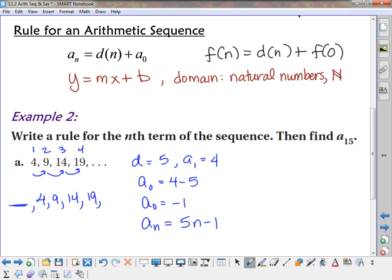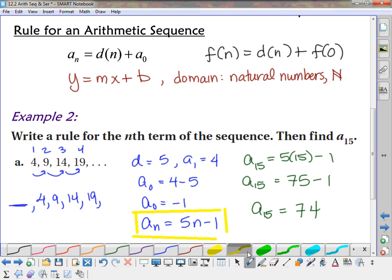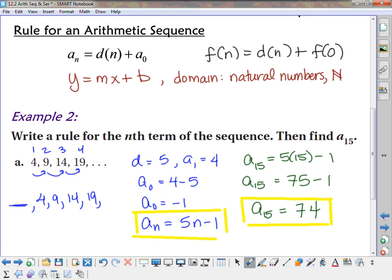So now my rule is just a sub n equals 5n minus 1. Because my difference is my slope, and then I just found, by working backwards, what would go for a sub 0. So essentially, it's what your y-intercept would be if you were graphing it on a line. And it was an actual continuous line, not a discrete function. All right, and then to find a sub 15, we just have to plug in a 15. So 5 times 15 minus 1, that's 75 minus 1. So a sub 15 would be 74.